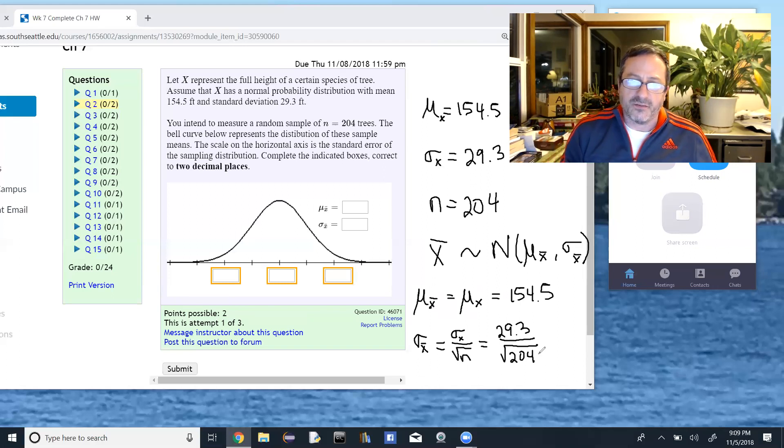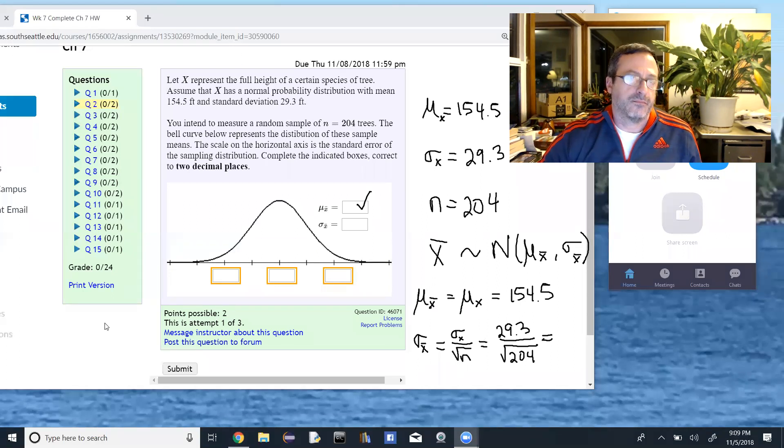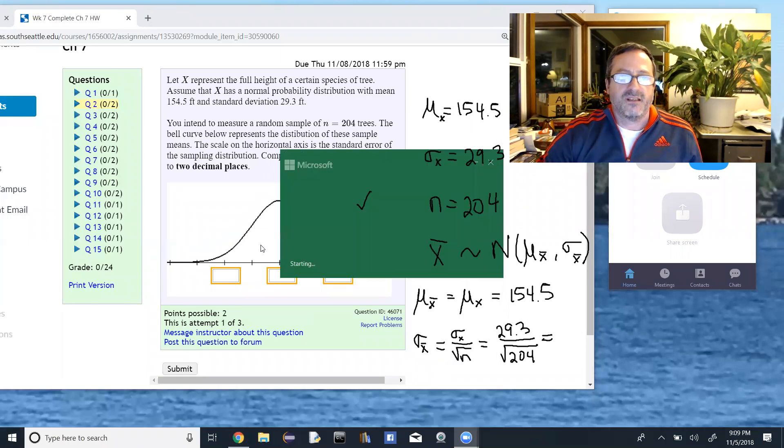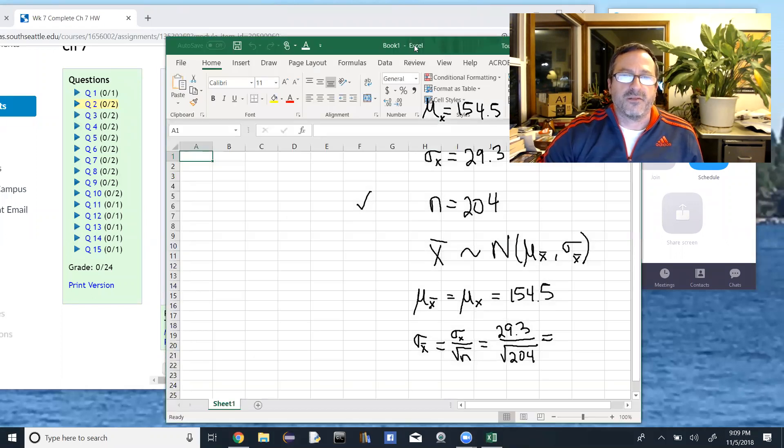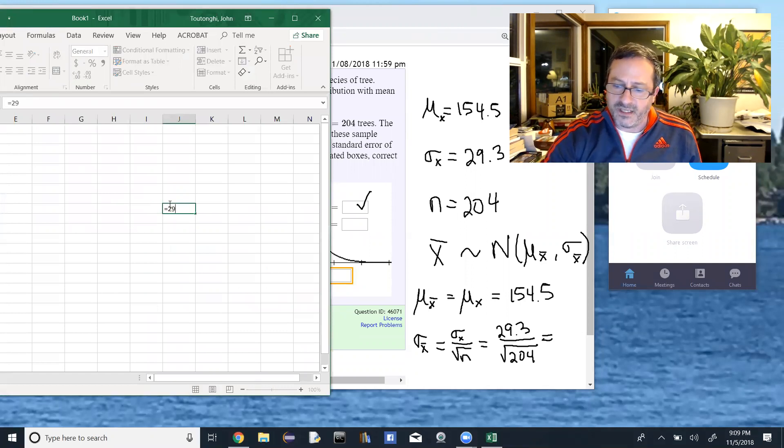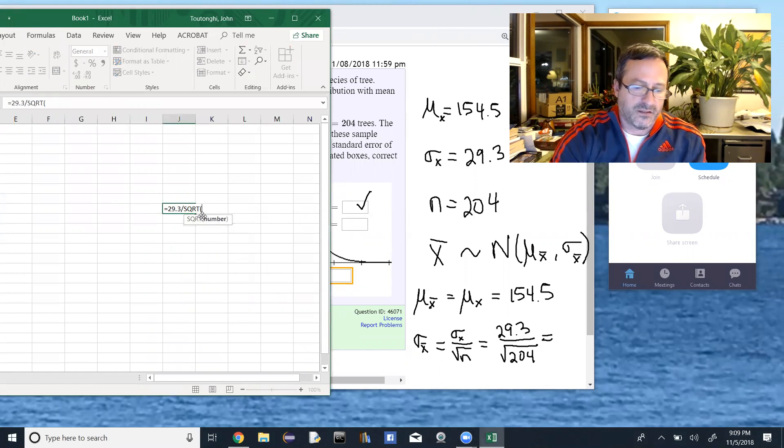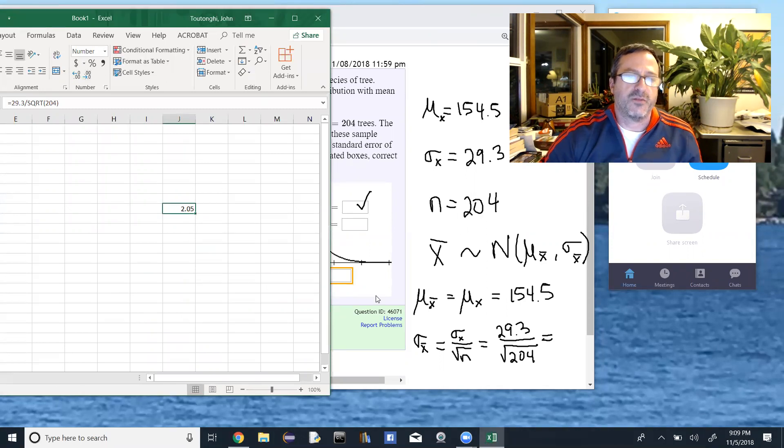Mu sub X is 154.5 and this guy, we would need to round it to two decimal places. So we would need to open up Excel or jump into our calculator. I'll just use Excel real quick. So this equals 29.3 divided by the square root of 204, and then we'll round that to two decimal places, 2.05.